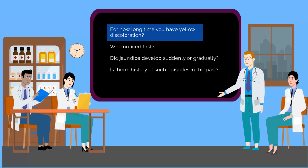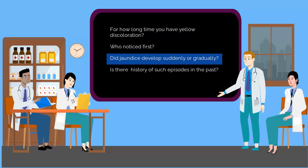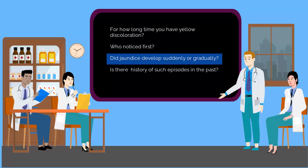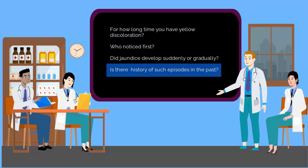For how long have you had yellow discoloration? Who noticed it first? Did the jaundice develop suddenly or gradually? Is there a history of such episodes in the past?